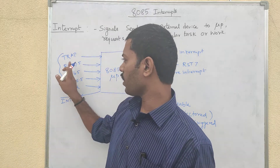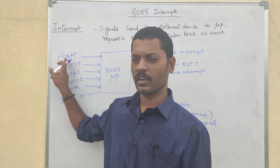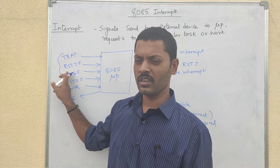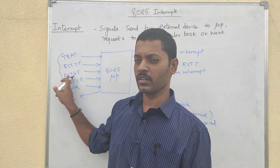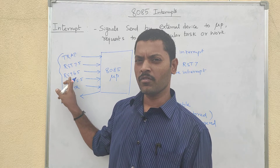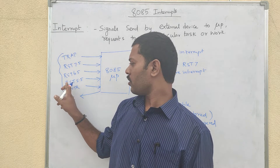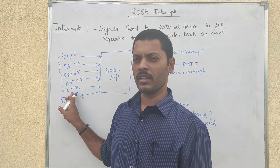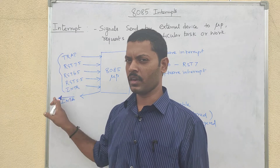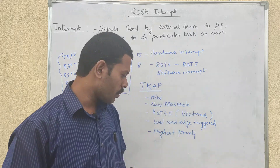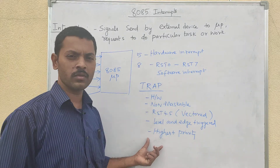The priority order is: first priority is Trap, second priority is RST7.5, next is RST6.5, then RST5.5, and the final lowest priority is INTR. Trap is the highest priority interrupt.